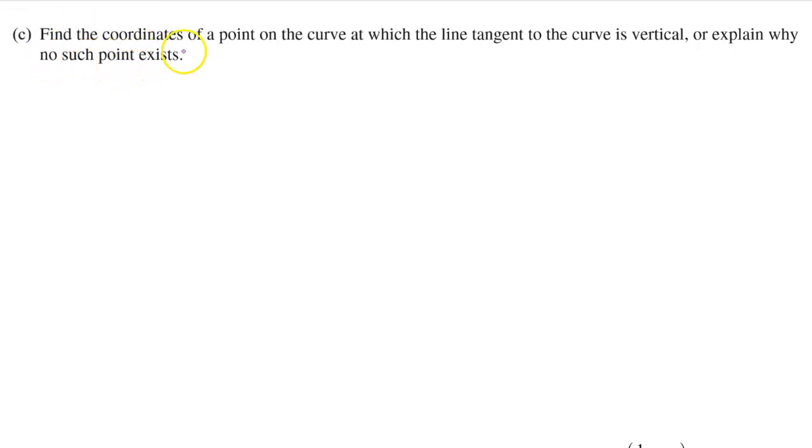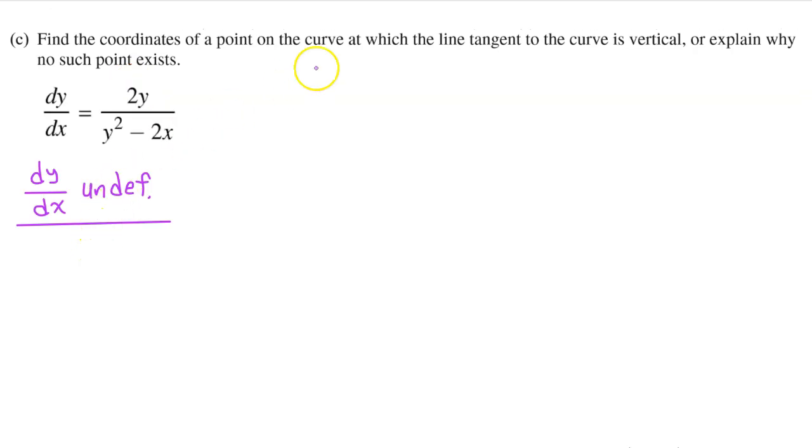Part C: Find the coordinates of a point on the curve at which the line tangent to the curve is vertical, or explain why no such point exists. A vertical tangent line will only occur where dy/dx is undefined. A fraction will be undefined when the denominator is equal to 0, so we have y² minus 2x is equal to 0.